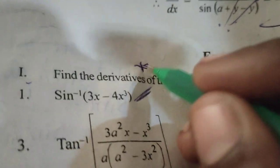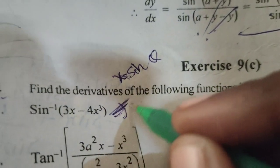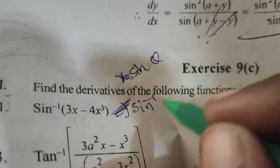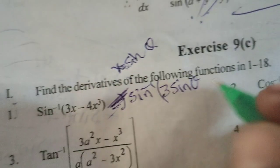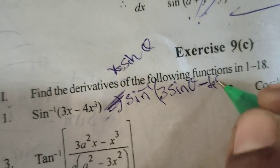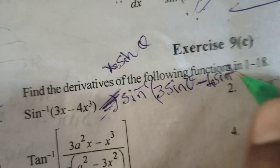Here put x equals sine theta. Then sine inverse of 3 sine theta minus 4 sine cube theta.